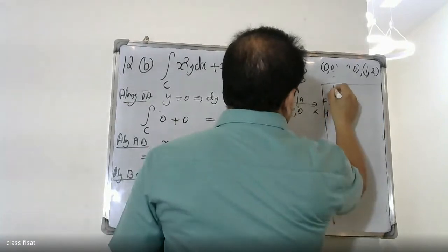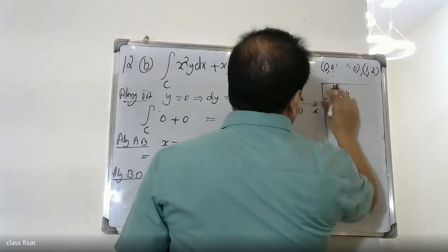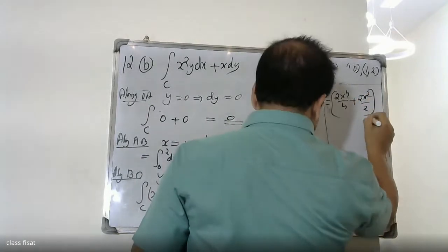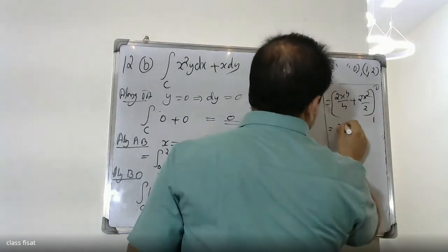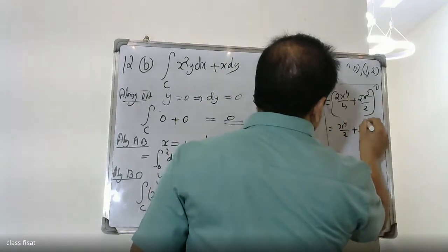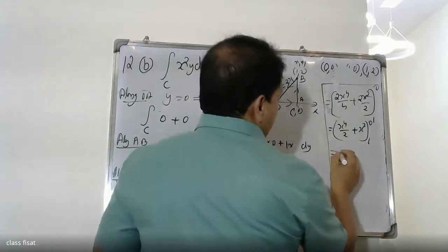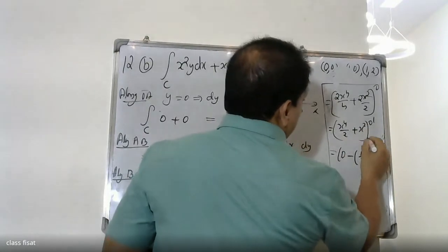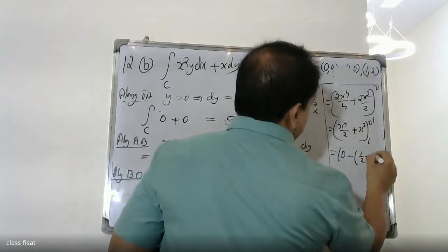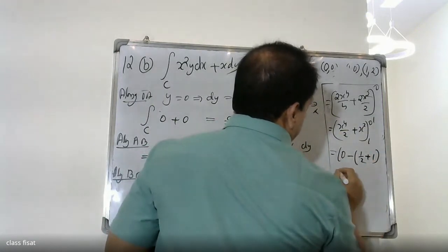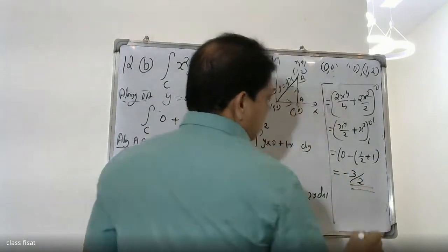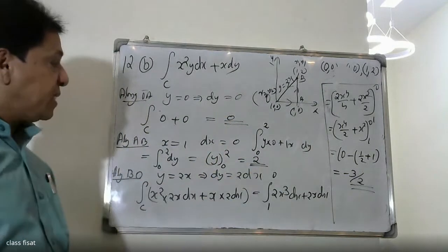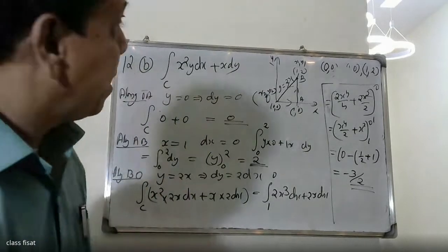Evaluating from 1 to 0: 2x raised to 4 by 4 plus 2x squared by 2, which simplifies to x raised to 4 by 2 plus x squared, evaluated from 1 to 0. This gives 0 minus (1/2 plus 1), which equals minus 3/2. The contributions from OA, AB, and BO give values for each segment.